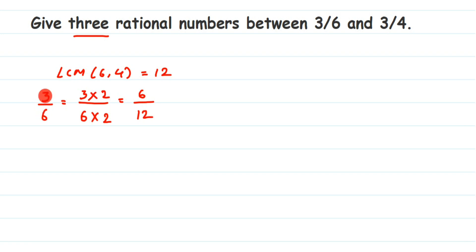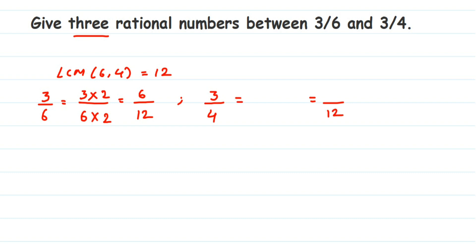Instead of finding rational numbers between 3/6 and 3/4, we are now going to find them between their equivalents with denominator 12. For 3/4, we change the denominator to 12 by multiplying by 3. So 3 × 3 = 9 and 4 × 3 = 12, giving us 9/12.